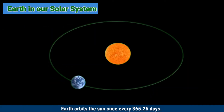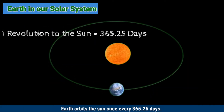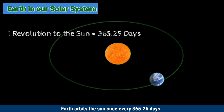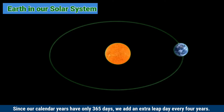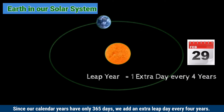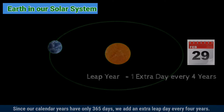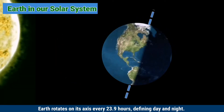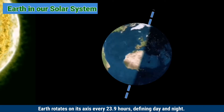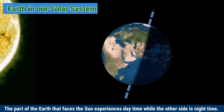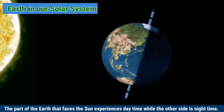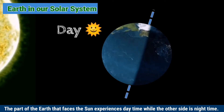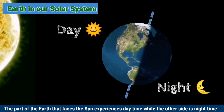Earth orbits the sun once every 365.25 days. Since our calendar years have only 365 days, we add an extra leap day every four years. Earth rotates on its axis every 23.9 hours, defining day and night. The part of the Earth that faces the sun experiences daytime, while the other side is nighttime.